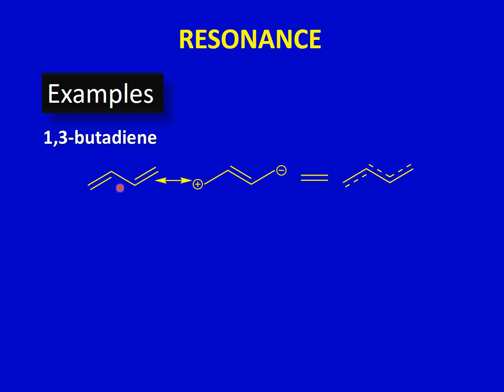The pi electrons can delocalize over all four carbon atoms. As a result of shifting of pi electron density, you get a charge-separated structure. These two structures are separated by a double-headed arrow, which shows that resonance is happening in this molecule — it is different from the double arrow with half-heads used for equilibrium.